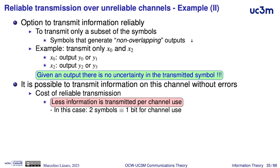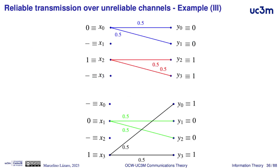Summarizing, if we find a subset of symbols with non-overlapping outputs, it is possible to have a fully reliable transmission at the price of less information per channel use. In this example, it is relatively simple to find such a subset. In fact, several options are possible, like transmitting X0 and X2, or transmitting X1 and X3.